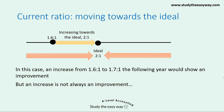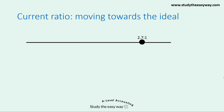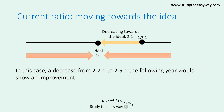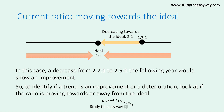However, an increase is not always an improvement. Imagine a different business whose current ratio is 2.7 to 1. An improvement is a movement towards the ideal level — so in this case, an improvement would actually be a decrease in the ratio towards the ideal. For example, a decrease from 2.7 to 1 to 2.5 to 1 the following year would show an improvement. To identify if a trend is an improvement or a deterioration, look at whether the ratio is moving towards or away from the ideal level.